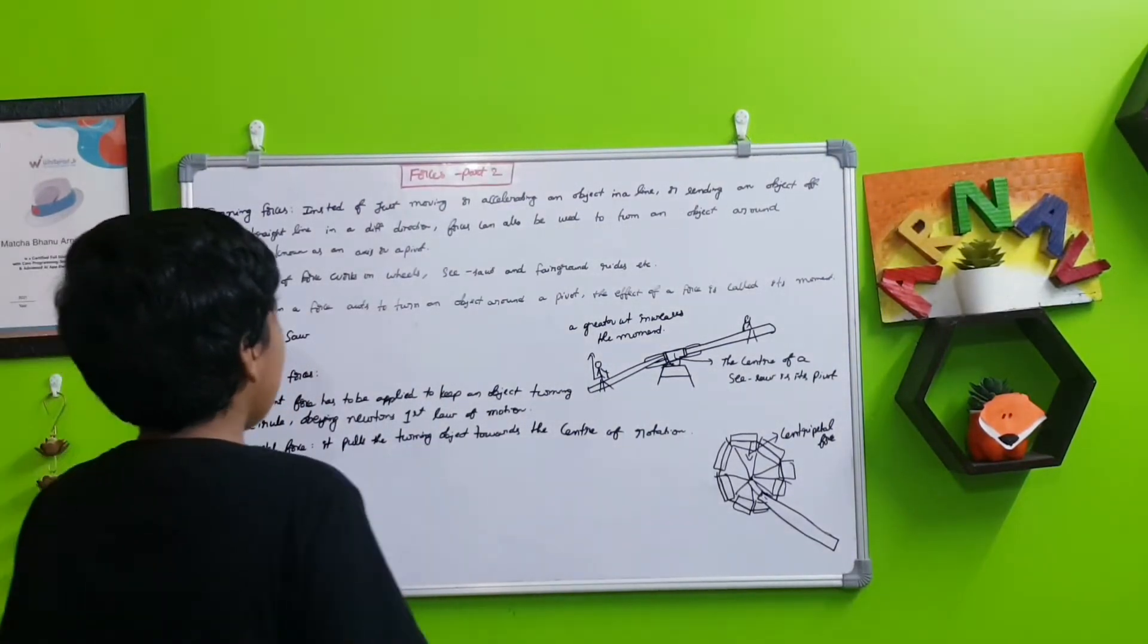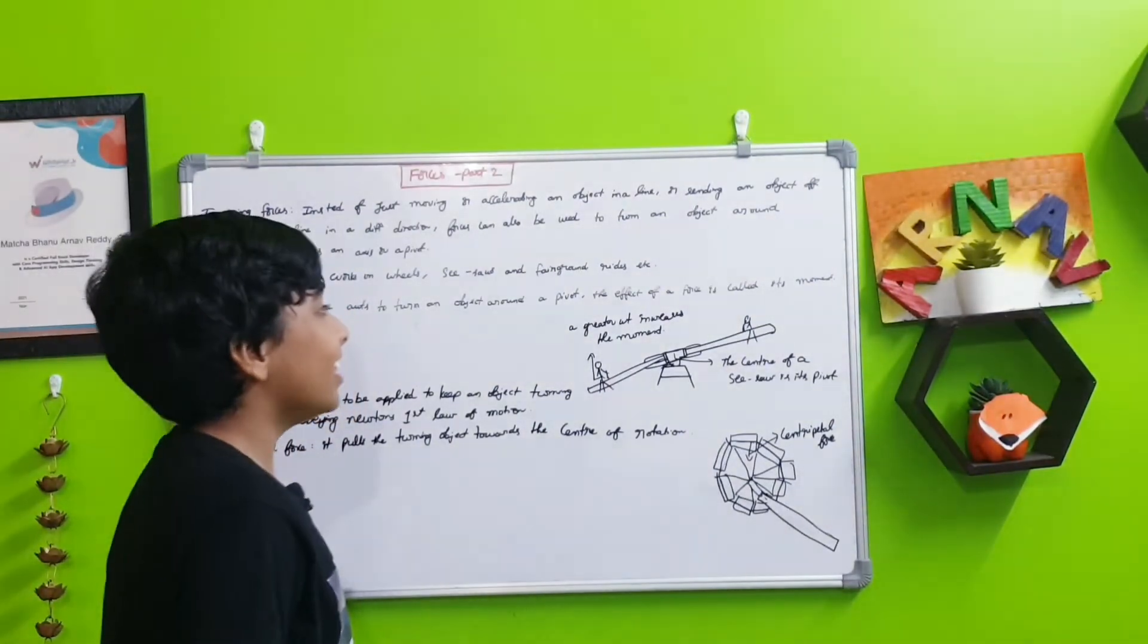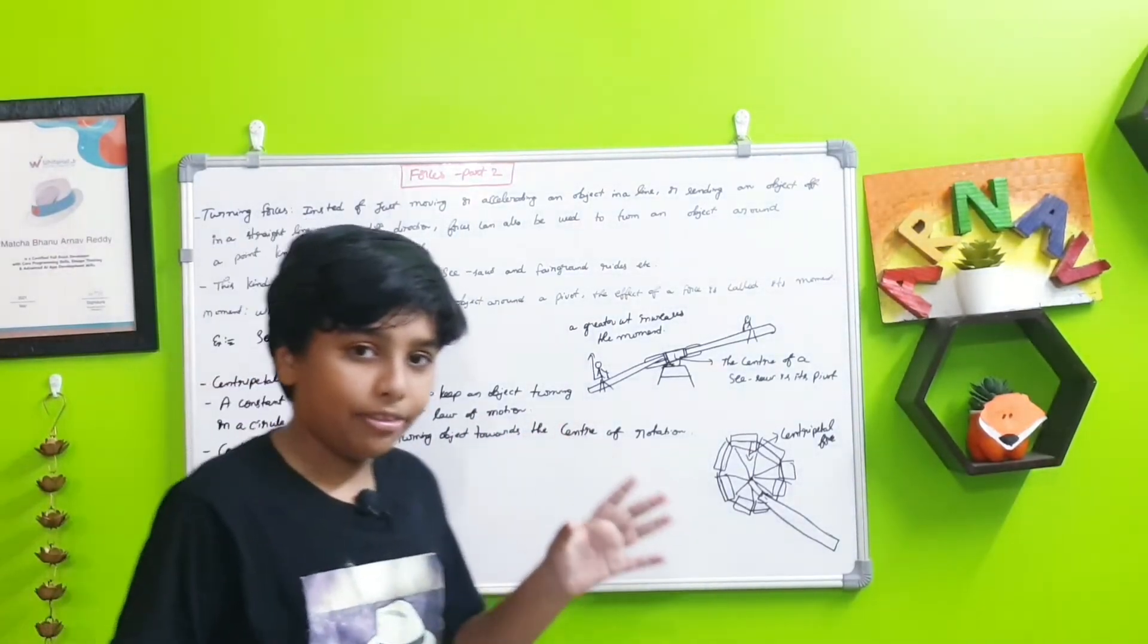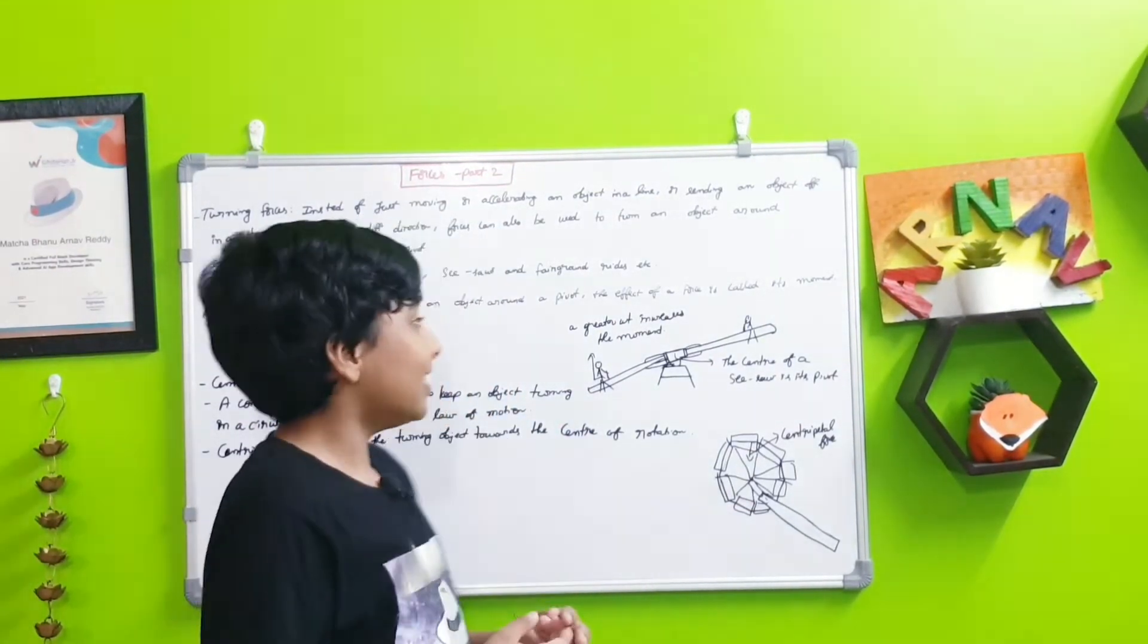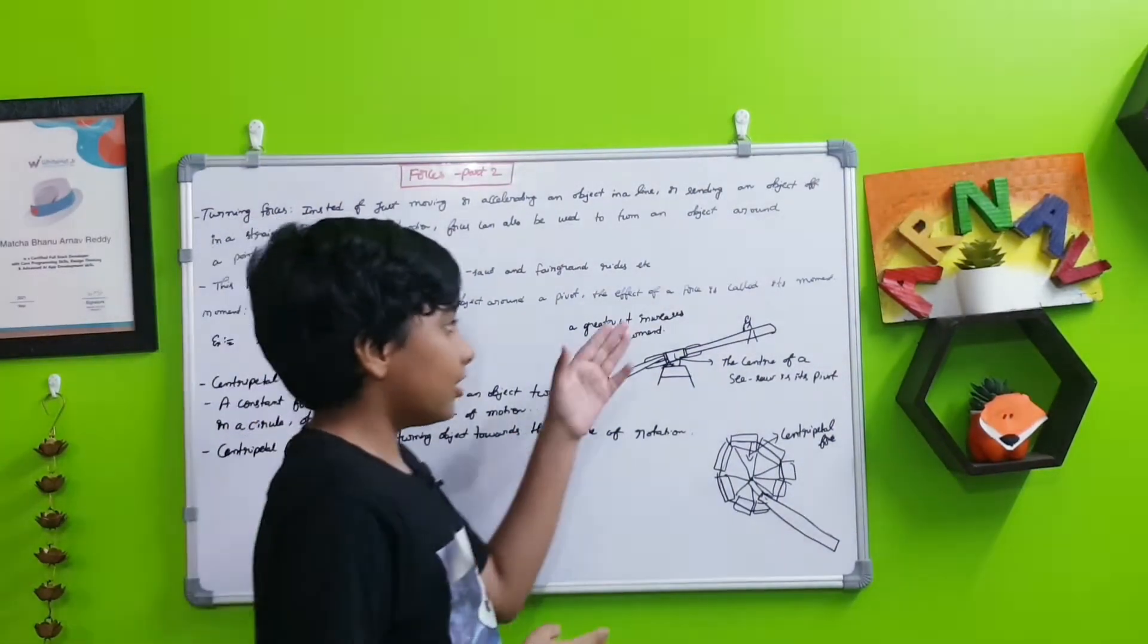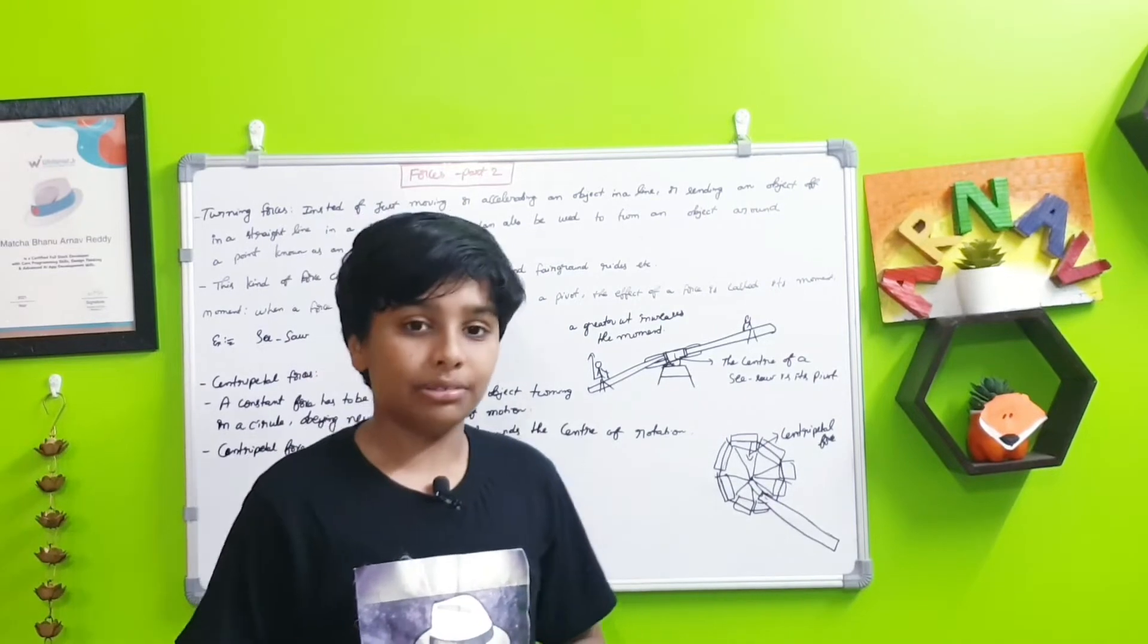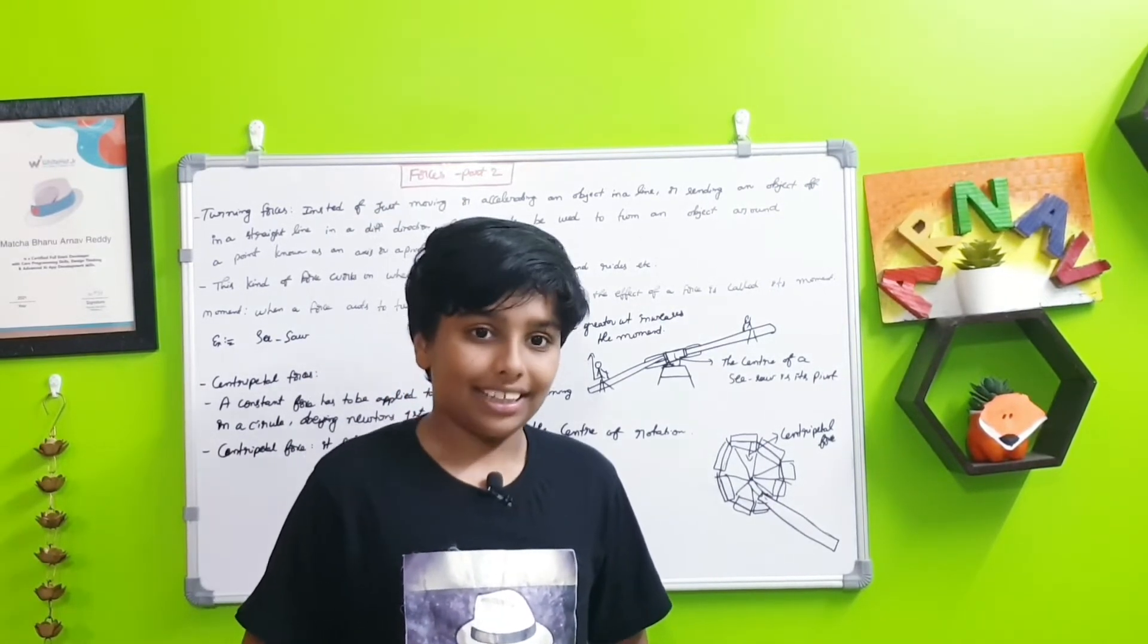The moment. When a force acts to turn an object around the pivot, the effect of the force is called its moment. When this force is going to move the object around or just next to the pivot, that force, the effect of that force, is known as the moment.